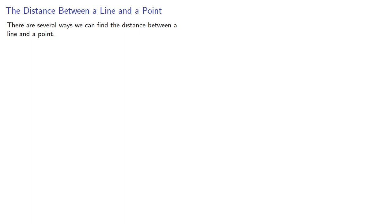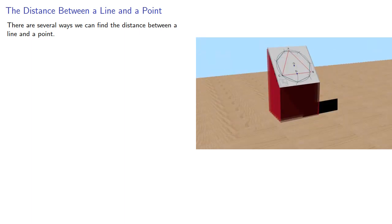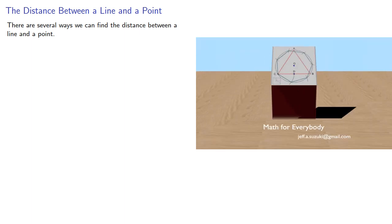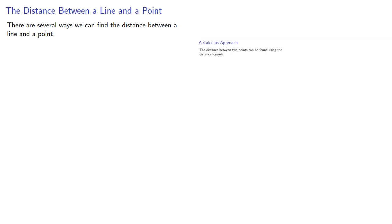There are several ways we can find the distance between a line and a point. One method uses the dot product and trigonometry, another method uses calculus optimization approaches, and a third approach uses systems of linear equations.